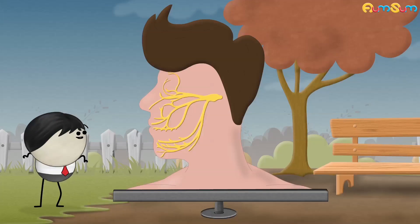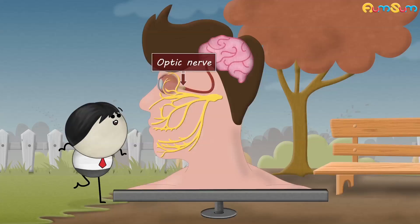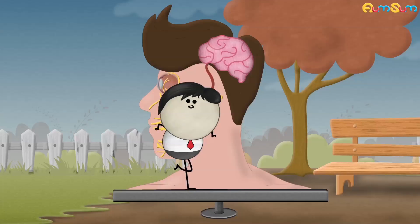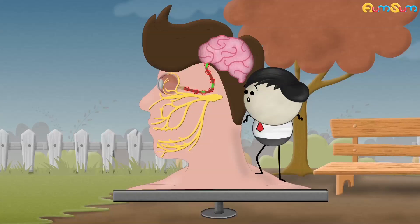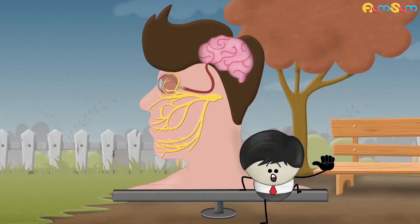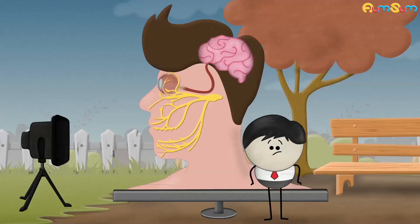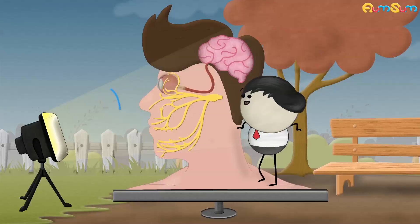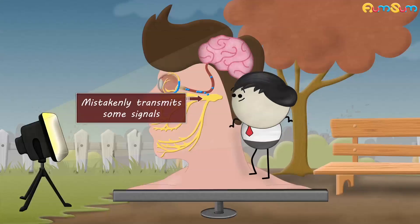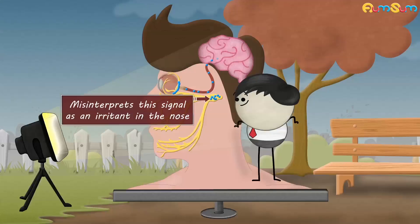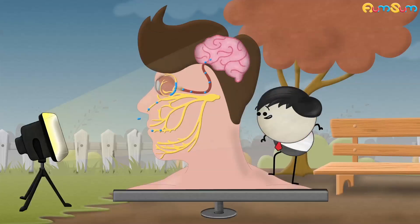The trigeminal nerve lies quite close to the optic nerve which sends visual information from our eyes to the brain. Now, in some people, this optic nerve is over sensitive. When bright light suddenly stimulates the optic nerve, the optic nerve mistakenly transmits some signals to the nearby trigeminal nerve. Hence, the trigeminal nerve misinterprets this signal as an irritant in the nose and thus triggers sneezing.